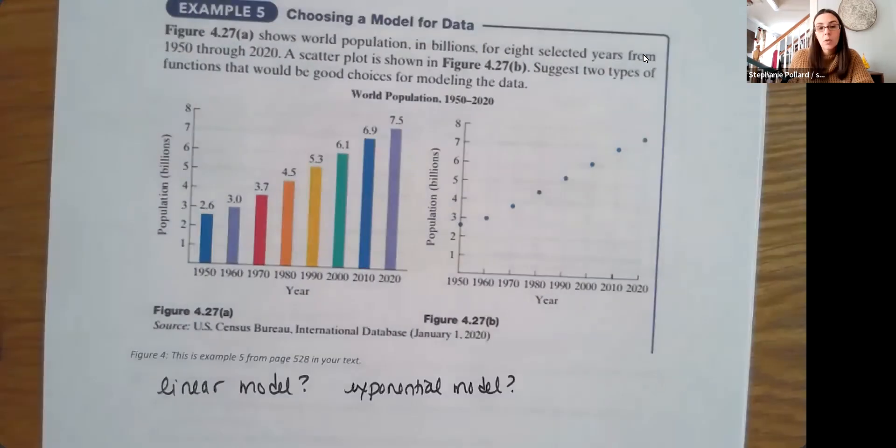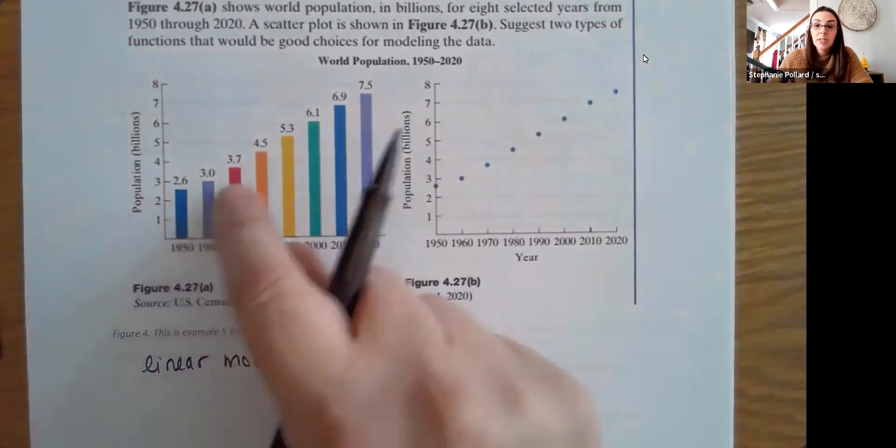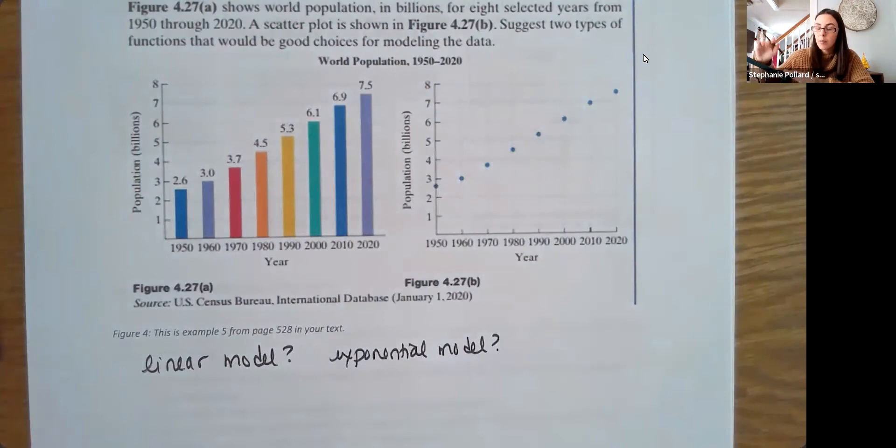So these are maybe the two that I would suggest here, or also maybe a logistic model, which is a kind of exponential too, right? Where you have that flattening at the top. So those could be two potential ones.